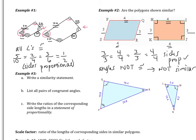Let's look at example 3. First, write a similarity statement. A similarity statement is very similar to a congruency statement — like when you wrote 'triangle ABC is congruent to triangle DEF.' We're going to do the same thing here. The first triangle can be written however you want, so I'll say triangle PQR. Triangle PQR is similar to triangle — PQR has 3 tick marks, 1 tick mark, 2 tick marks — so I match those: 3, 1, 2 gives me L, M, N. So triangle PQR is similar to triangle LMN.